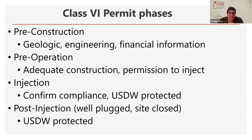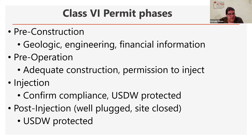Then there is the injection phase where they start to inject, and the EPA and permitting requires confirming that they're in compliance with the permit requirements and that underground sources of drinking water are also protected and safe. And then there is the post-injection phase. Most permits will be for the life of the project — in the case of Wabash Valley Resources, that's 12 years. Then they will have to close the site, plug the well, and there's a 50-year post-closure monitoring requirement.